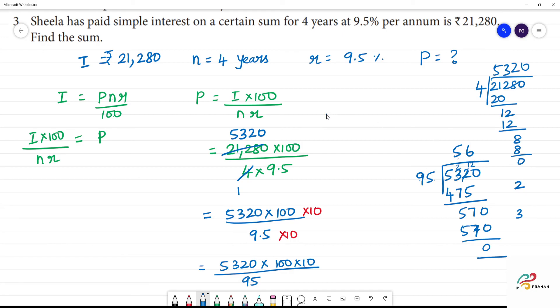So now we have 56, which equals 56 into 1000, which equals Rs. 56,000.